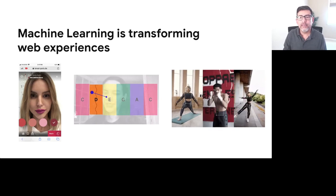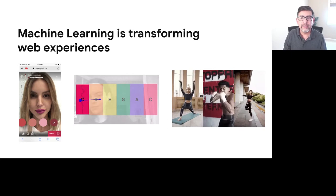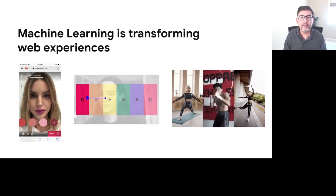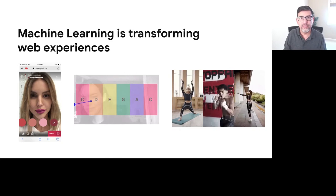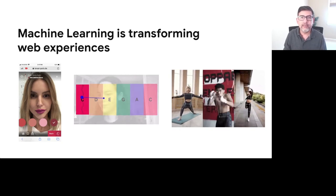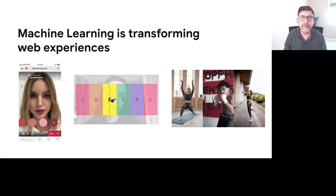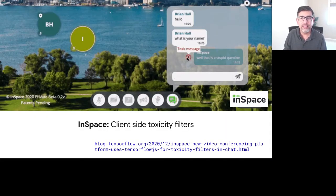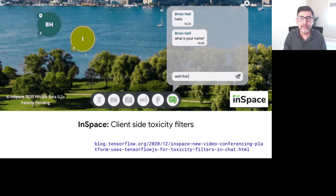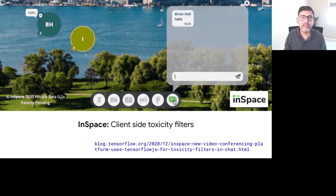We are beginning to see how machine learning can help improve web experiences as well, whether it is to interactively experience products — such as this virtual makeup try-on web app by L'Oreal — or accessibility tools such as the one shown here in the middle, where a person is playing a keyboard by moving their head, or apps that can detect body pose and use that in many useful ways. Let's take a look at some specific examples of how web developers have been using machine learning. InSpace is a virtual learning and collaboration platform, and they use real-time toxicity filters in their web conferencing app. When a user types something bad, it's flagged before it's even sent to the server for processing, alerting the user that they may want to reconsider what they are about to send, creating a more pleasant and safer conversational experience.